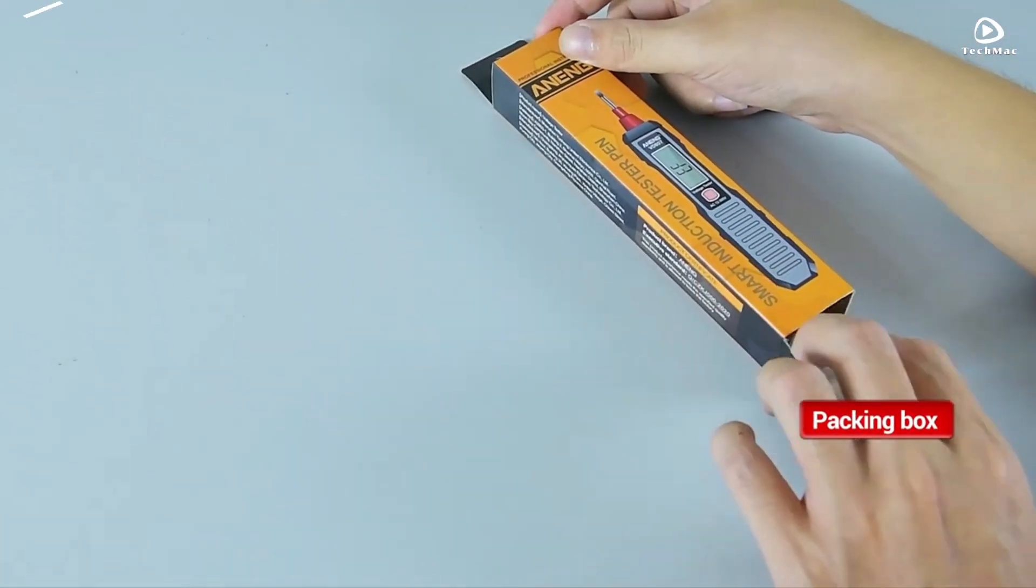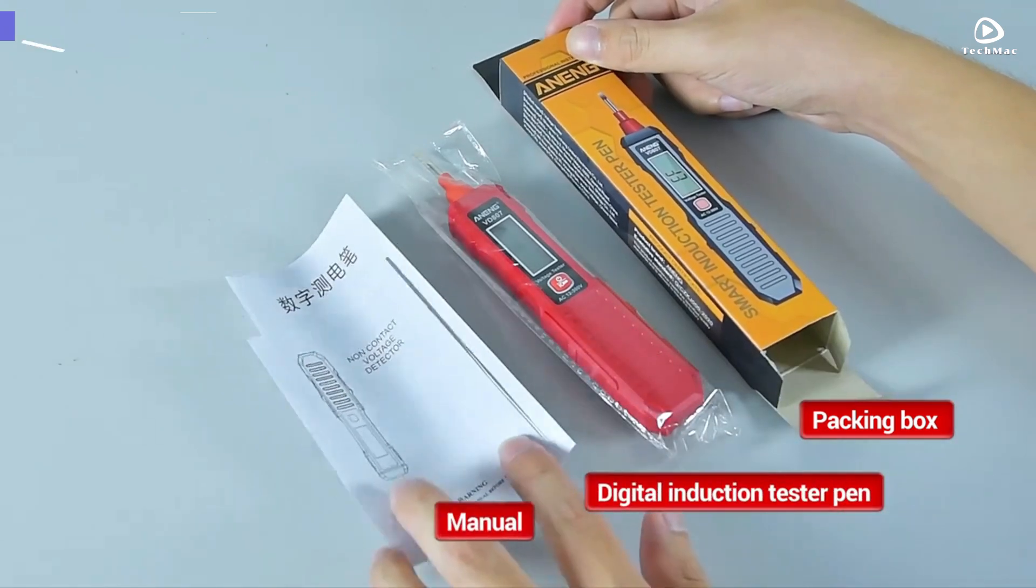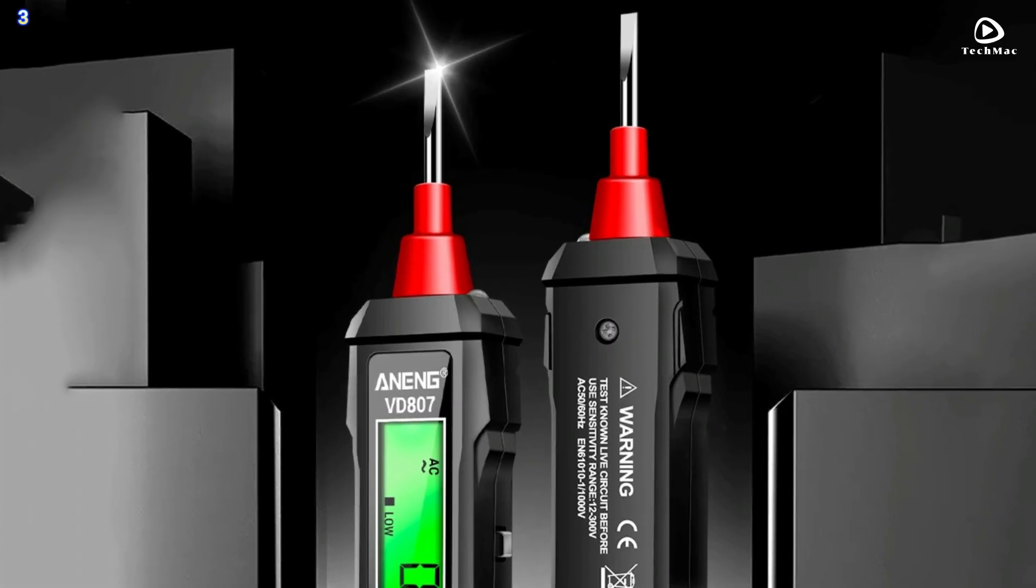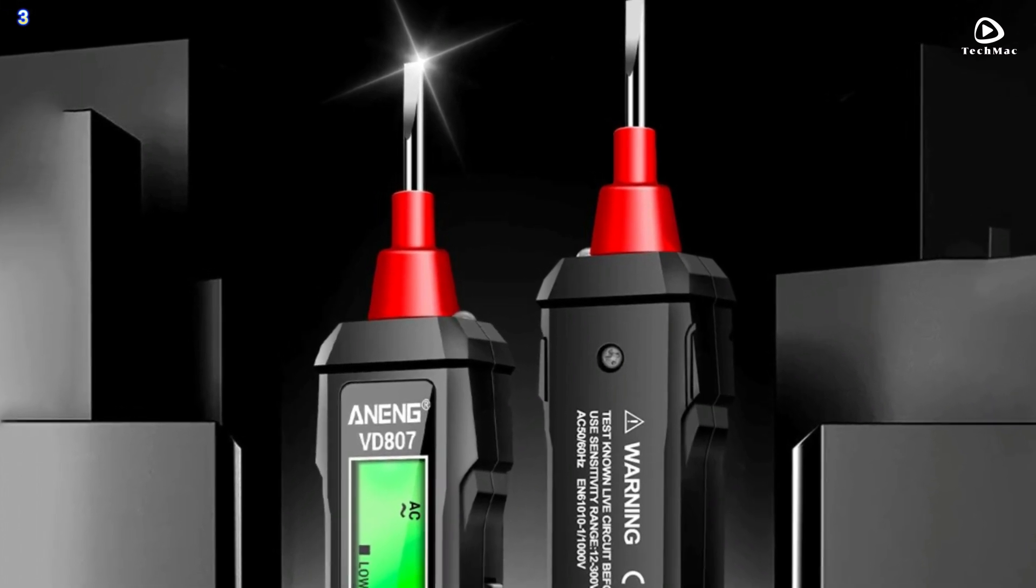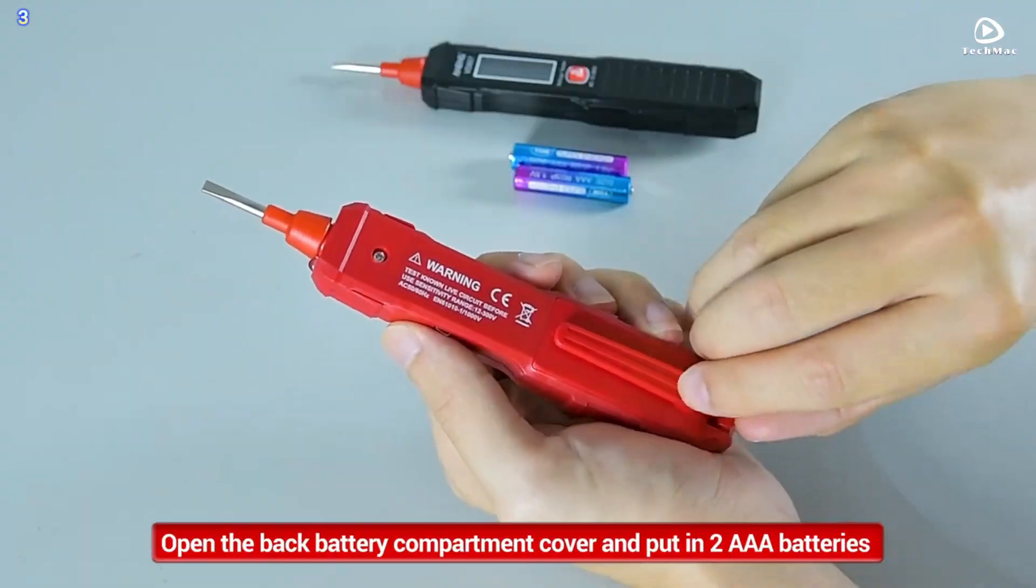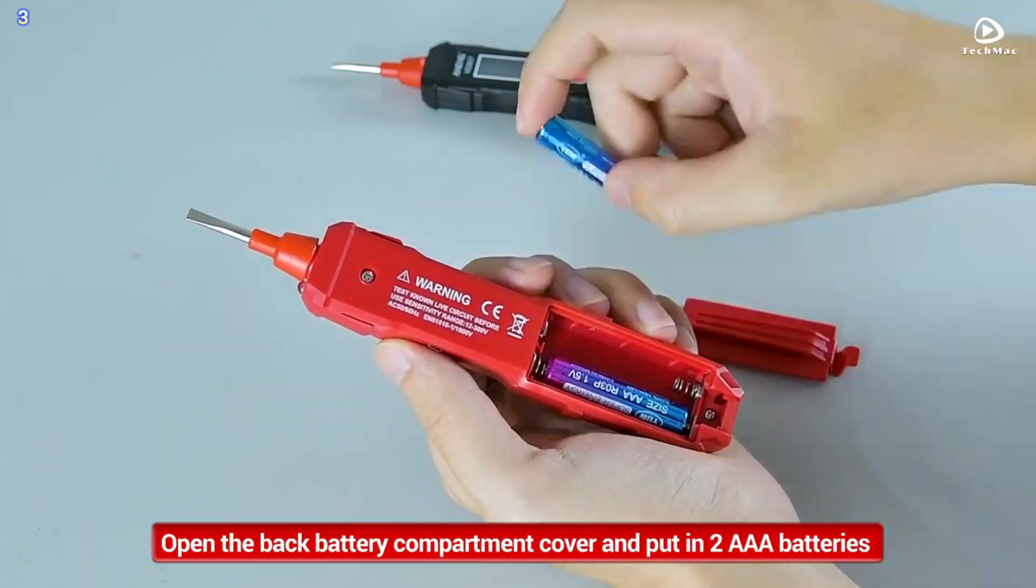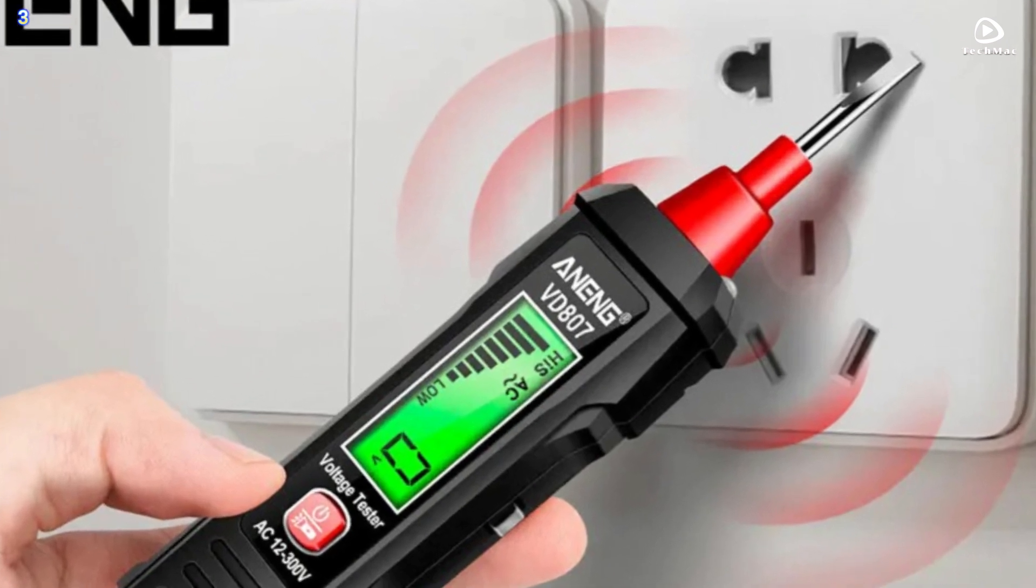Number 3: Anning VD807 Digital Voltage Detectors. The Anning VD807 is incredibly user-friendly. With its compact design, it fits right in your hand and can easily slip into your pocket or tool bag. But don't let its size fool you, this device is packed with powerful features.